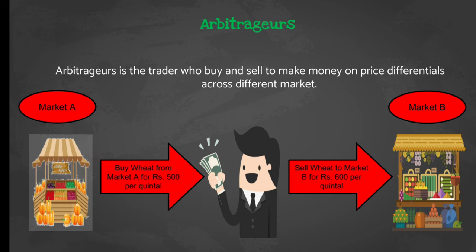Next is arbitrators. An arbitrator is a trader who buys and sells to make money on price differences across different markets. For example, suppose in Market A the price of wheat is 500 rupees per quintal, and in Market B the price of wheat is 600 rupees per quintal. Here, the prices in Market A and Market B are different. So the arbitrator buys wheat from Market A at 500 rupees per quintal and sells in Market B at 600 rupees per quintal to earn a profit of 100 rupees. This trader takes advantage of the price differentials between the two markets to earn profit. Such a trader we call an arbitrator.